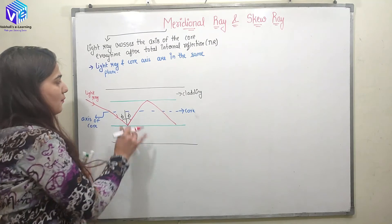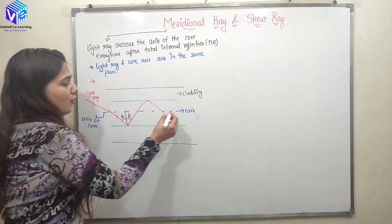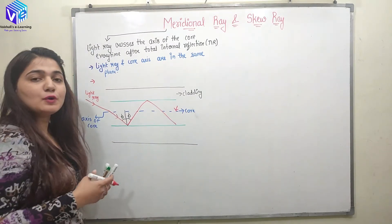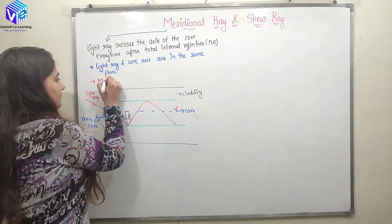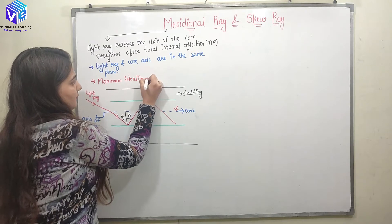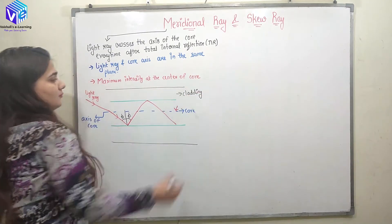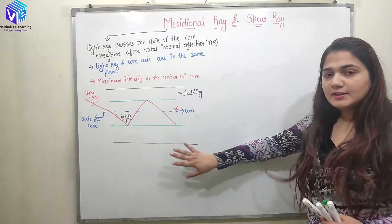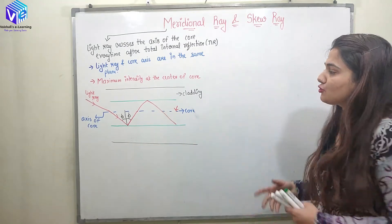Every time it is totally internally reflected, it is passing through the axis of the core. The third point is that at the center part of the core, we will be getting the maximum intensity. I hope you understood this type of light ray — this is the meridional ray.